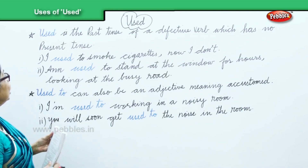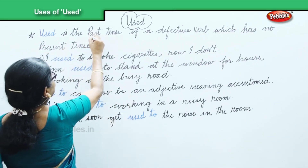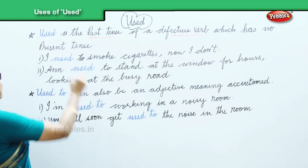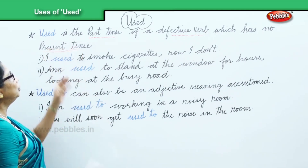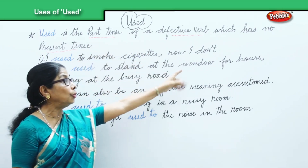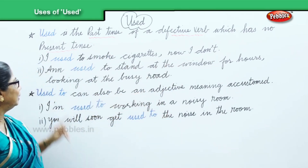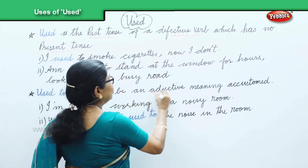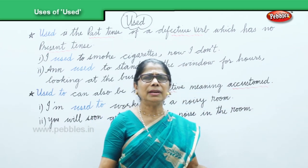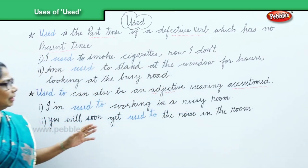So, 'used' is the past tense of a defective verb which has no present tense — 'I used to smoke cigarettes, now I don't' and 'Ann used to stand at the window for hours, looking at the busy road.' In the second part, 'used to' can also be an adjective meaning accustomed — getting used to, you are used to noise of children, a neat room, or a crowded place.